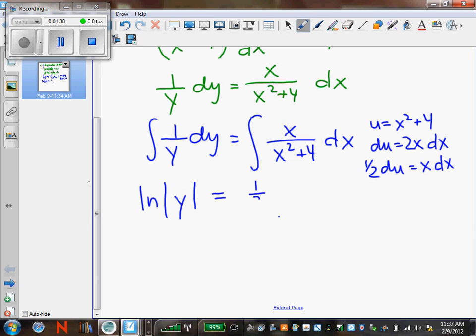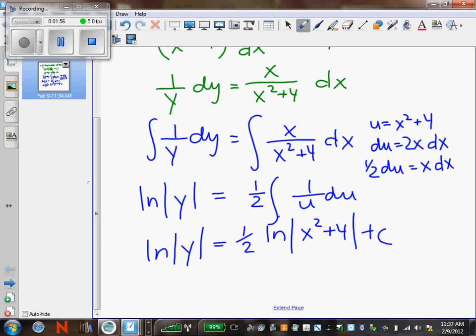So when I plug that in, I have 1 half times the integral of 1 over u du. So it looks like I'm going to have a natural log on both sides of my equation. So this is 1 half natural log of the absolute value of x squared plus 4 plus c. Now I do still have to solve that for y.